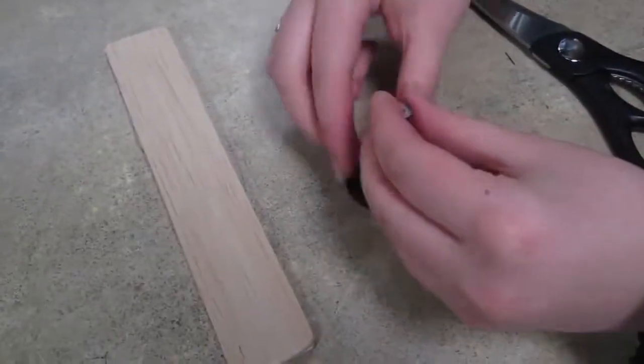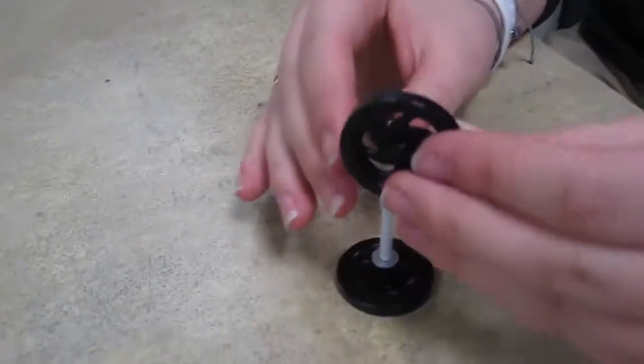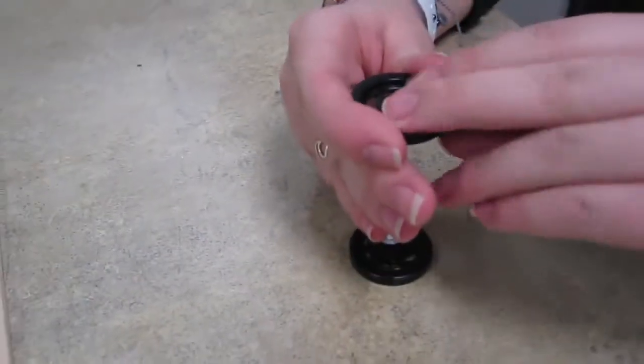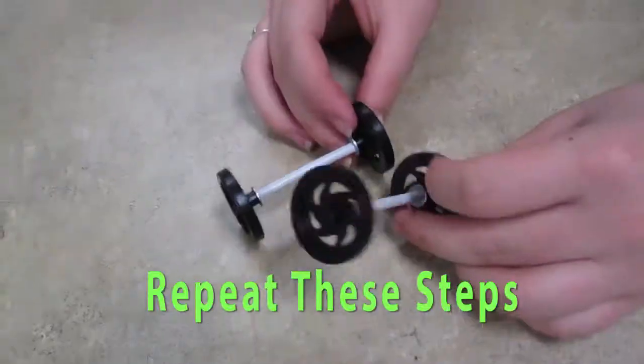So put a washer and then a straw and then put the second wheel on and hammer it in. Repeat these steps.